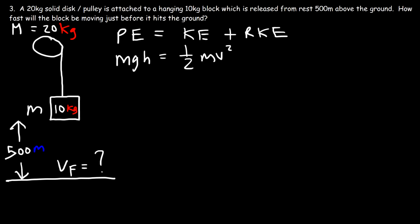Dividing both sides by 10, we get 4900 equals v squared. Taking the square root of both sides, the square root of 4900 is 70. So the final speed is 70 meters per second.